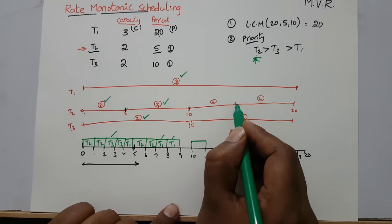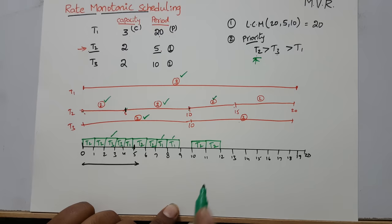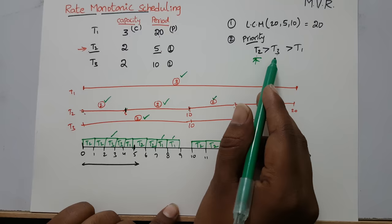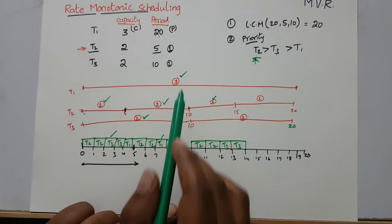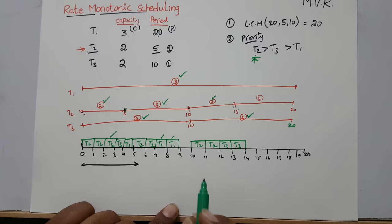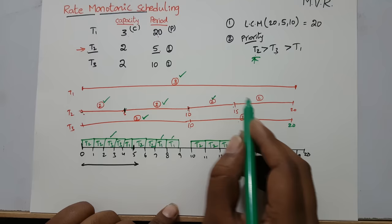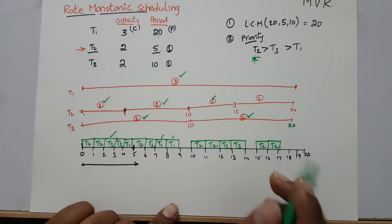At time 10, T2 executes 2 units again. After T2, T3 must execute 2 units for the interval 10 to 20. T3 comes in and executes its 2 units. T1 does not participate in scheduling anymore as it has completed all its execution. The remaining 2 units of T2 start at time 15, completing the full 20-unit schedule. This is the Rate Monotonic Scheduling algorithm.